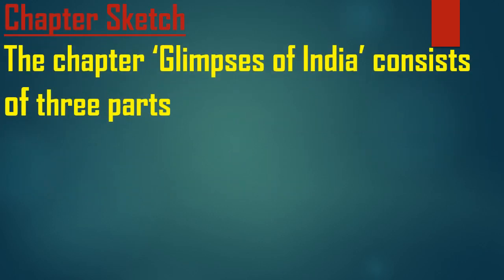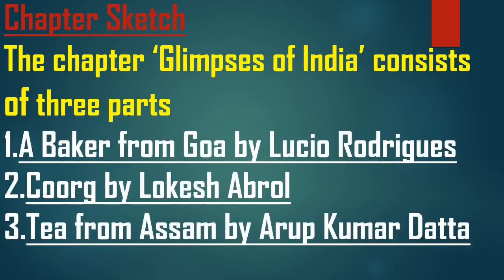Chapter sketch: Chapter 7, Glimpses of India, is from the First Flight book and consists of three parts. The first part is 'A Baker from Goa' by Lucio Rodrigues, the second is 'Coorg' written by Lokesh Abrol, and the third part is 'Tea from Assam' written by Aruk Kumar Datta. We have already done A Baker from Goa as well as Coorg, so today we are going to start this third part, Tea from Assam.